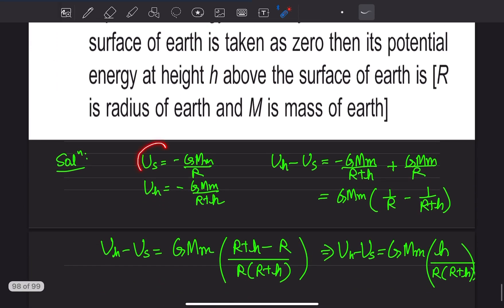At Earth's surface, potential energy is minus GMm by R. At height h, potential energy is minus GMm upon R plus h.